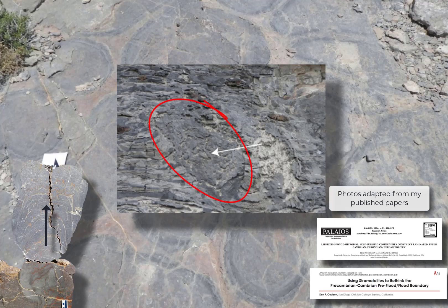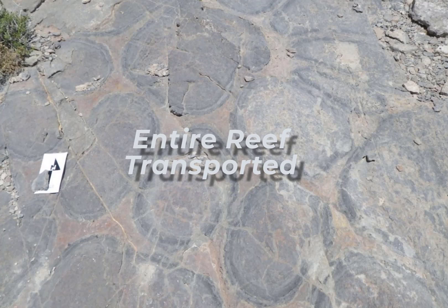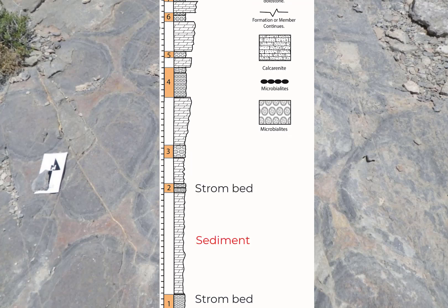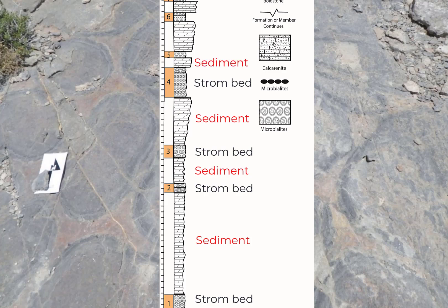If these stromatolites were transported, we should expect to see them in various orientations, not just upright. Some have suggested that the whole reef — perhaps several thousand square kilometres worth — was moved during the flood. The problem with this view is that each reef layer is separated by carbonate muds. This would mean that each reef would have to be moved and then evenly stacked one atop of the other in such a way that any evidence of this catastrophic geologic process was removed. There are no faults or other large-scale geologic features that support such a catastrophic relocation.